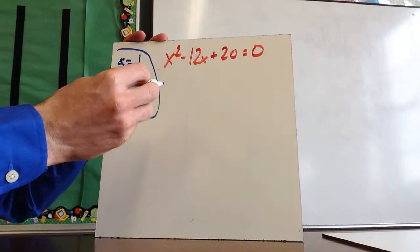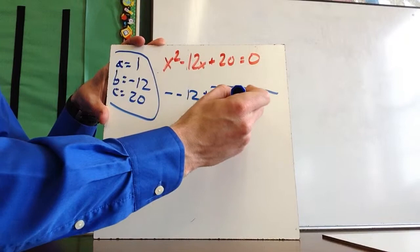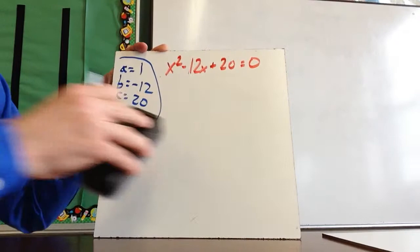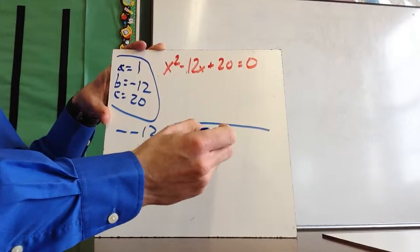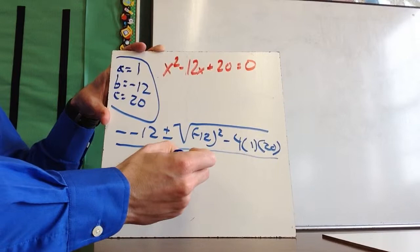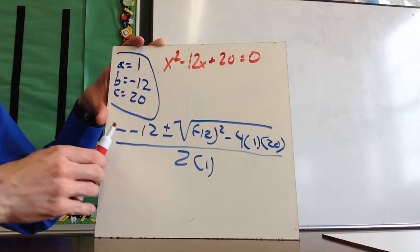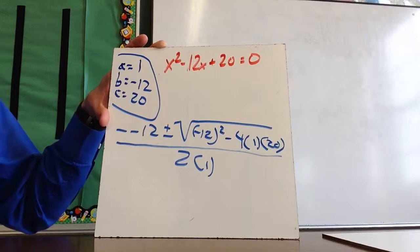So I've got negative b, which is negative negative 12, plus or minus the square root of b squared — that's negative 12 squared — minus 4 times 1 times 20, all over 2 times 1. This is the formula: negative b plus or minus the square root of b squared minus 4ac, divided by 2a.